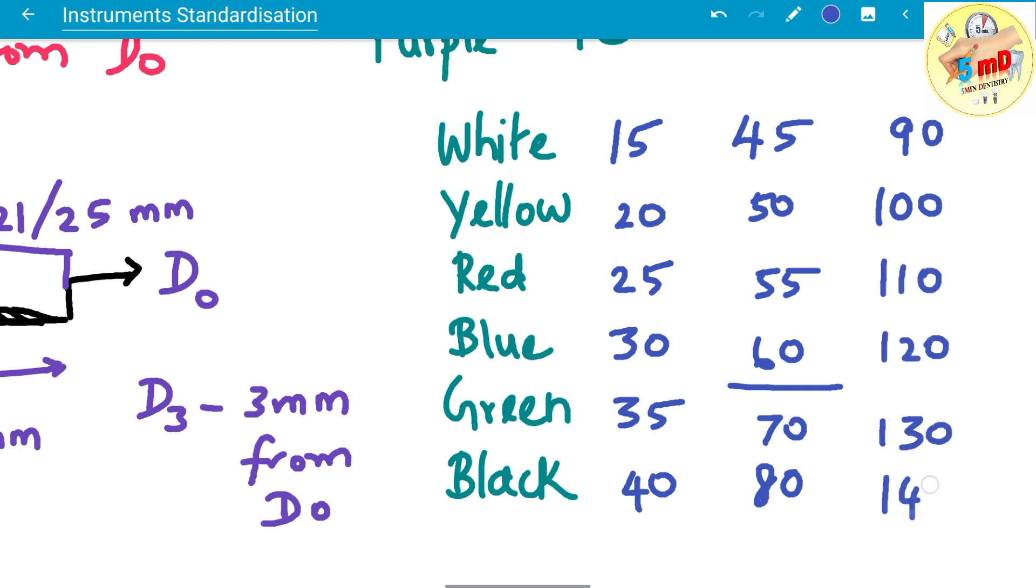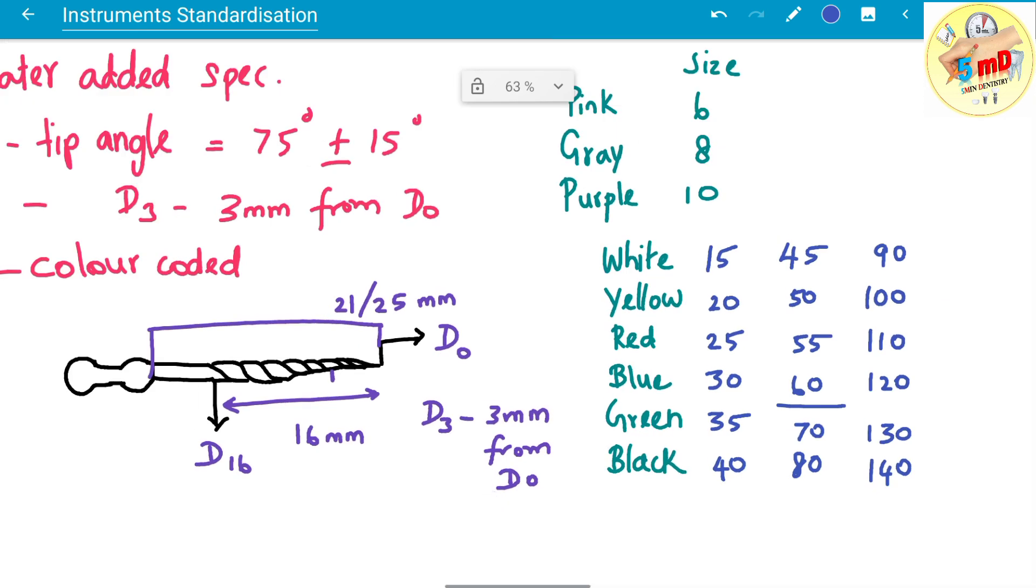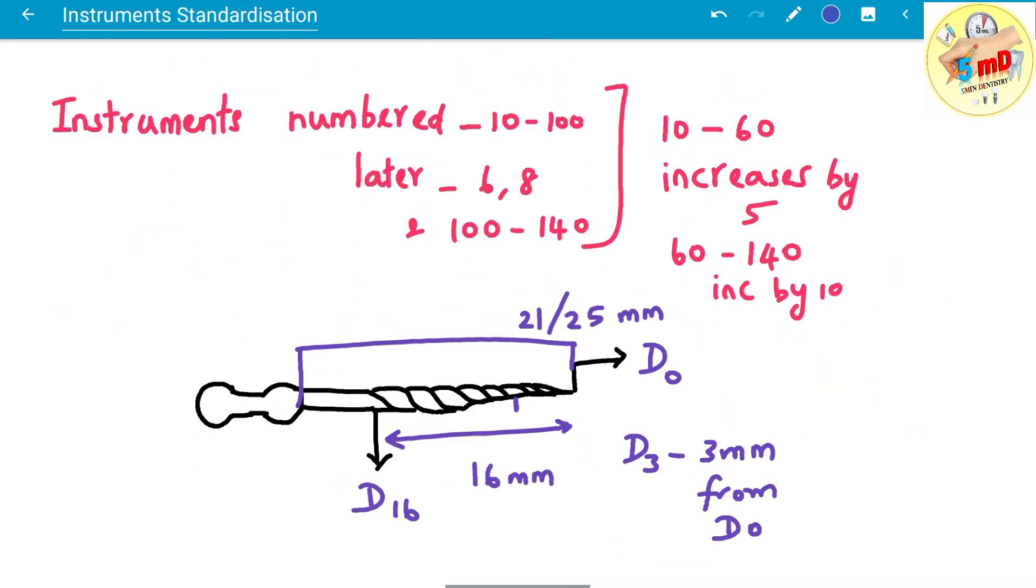These six set of colors repeat, and these color codings are given in the handle of the instrument.